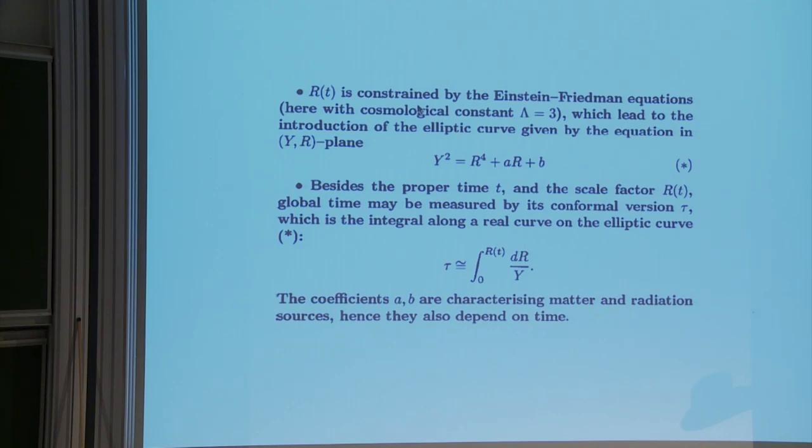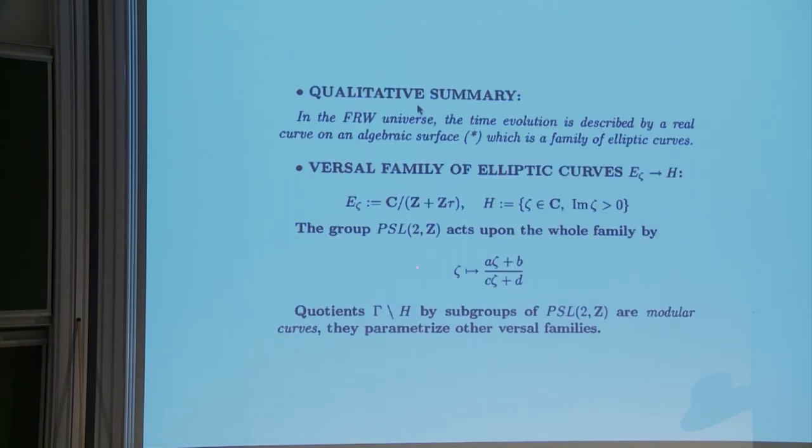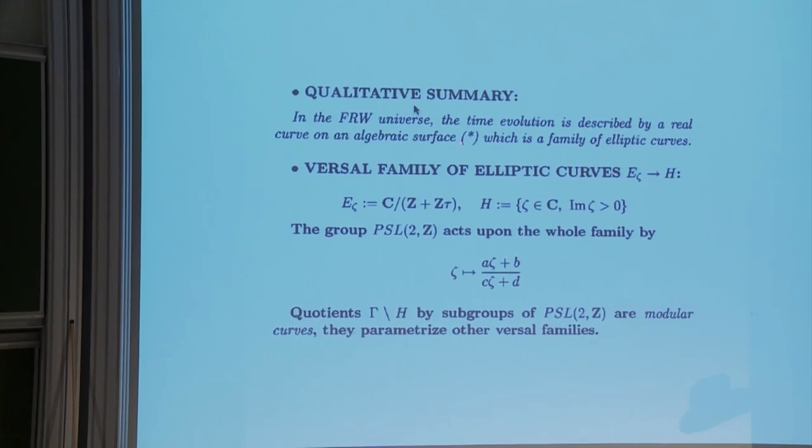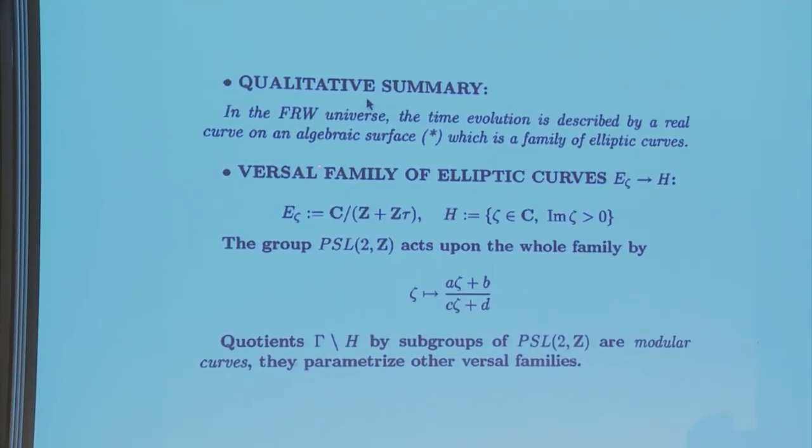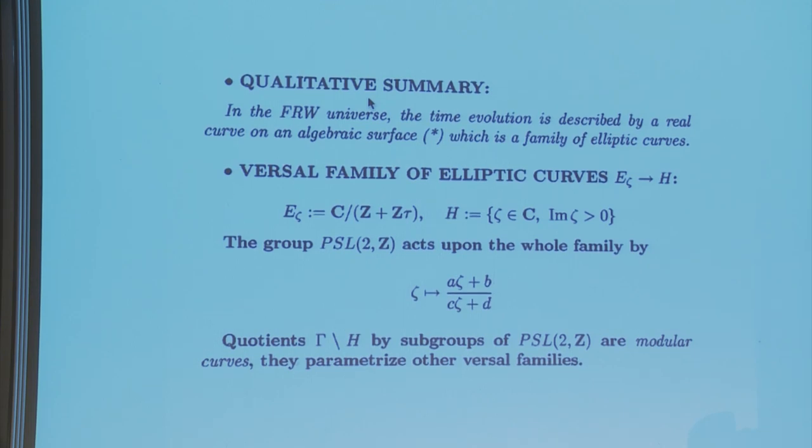The qualitative summary: In the Friedman-Robertson-Walker universe, the time evolution is described by a real curve on an algebraic surface. It's not universal, but a versal surface having all elliptic curves on it. There exists a very well-known to mathematicians versal family of elliptic curves, which is parametrized by the upper half plane. Just take a point τ, take in ℂ the lattice generated by 1 and τ, and take the quotient. This group acts upon the whole family in this way, and quotients by subgroups of finite index are modular curves. They parameterize also other versal families.